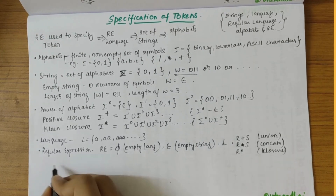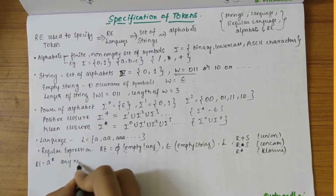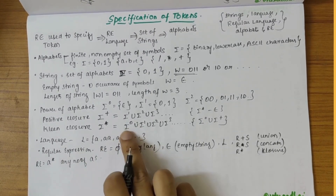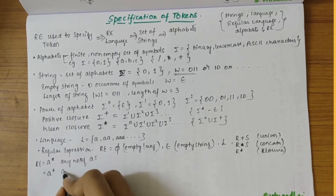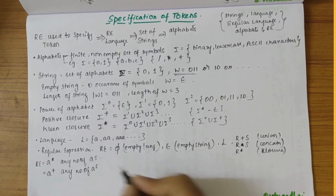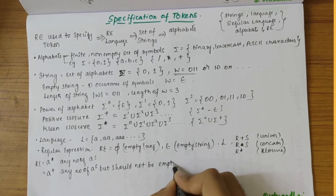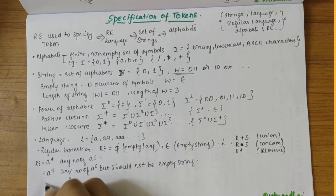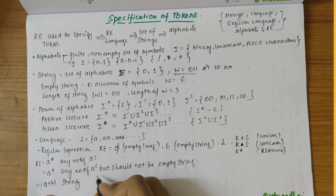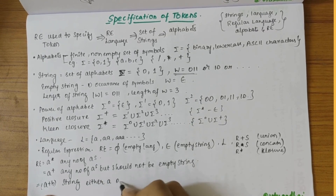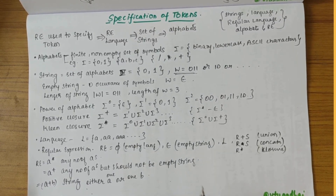For examples: if the regular expression is a*, the string can comprise any number of a's and can also be an empty string, because we have star. If it is a+, the string can comprise any number of a's but it should not be an empty string. If we have a+b as the regular expression, the string could start with either one a or one b.